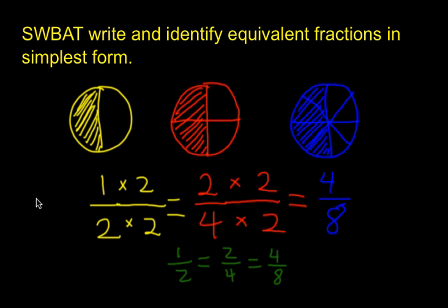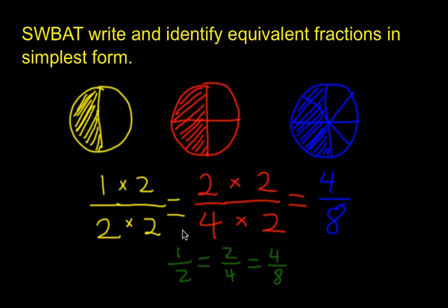Just as a quick review from our previous two lessons in Chapter 6, Lessons 1 and 2, you can tell if two fractions are equivalent if they have the same multiplication relationship. For example, 1 half is equivalent to 2 fourths because the numerator 2 has twice as many parts as 1, and the denominator 4 has twice as many parts as 2. So if you have the same multiplication relationship, you can have equivalent fractions.